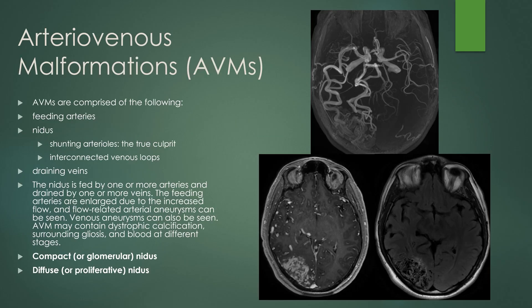Arteriovenous malformations, or AVMs, are comprised of feeding arteries, a nidus which is a nest of vessels. This contains the shunting arterioles, which are the true culprit, and the interconnected venous loops, as well as the draining veins. The nidus is fed by one or more arteries and drained by one or more veins. Those feeding arteries are enlarged because of increased flow and pressure, and you can get flow-related arterial aneurysms. You can also get flow-related venous aneurysms from the drainage.